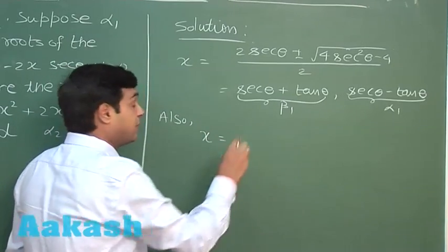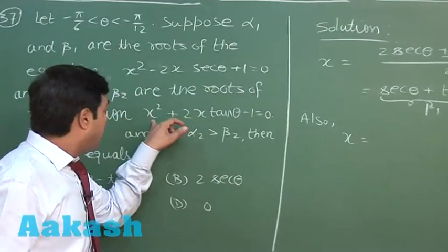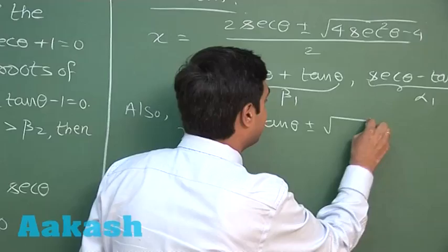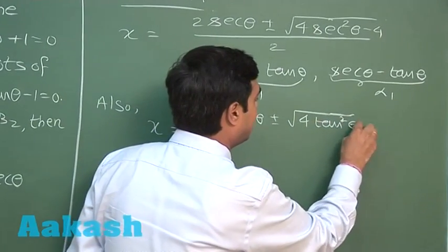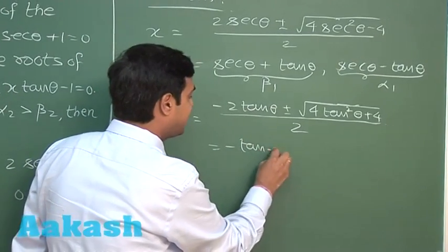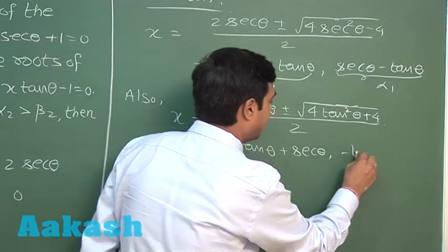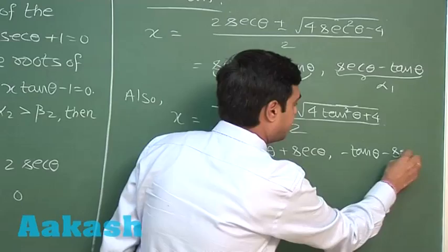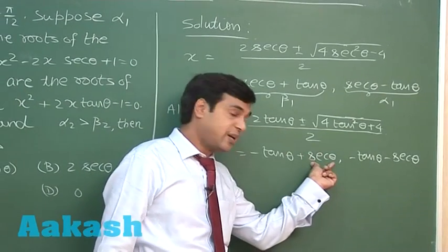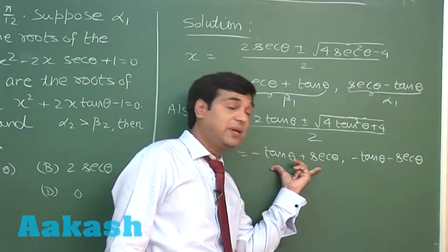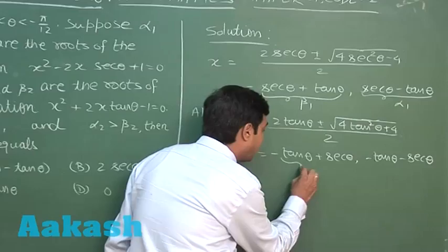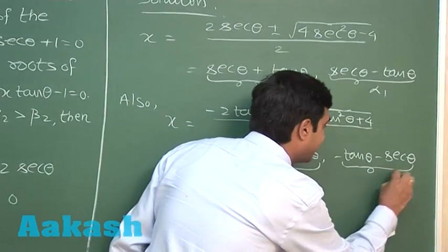For the second equation, x² plus 2x·tanθ minus 1 equals 0, the roots are obtained as minus tanθ plus secθ and minus tanθ minus secθ. Since theta is in the fourth quadrant, secθ is positive and tanθ is negative, so the first root is larger. Since alpha 2 is greater than beta 2, alpha 2 equals minus tanθ plus secθ and beta 2 equals minus tanθ minus secθ.